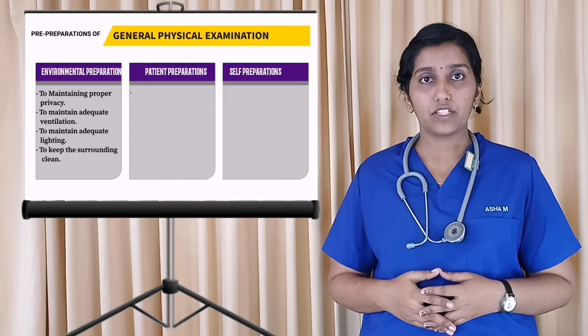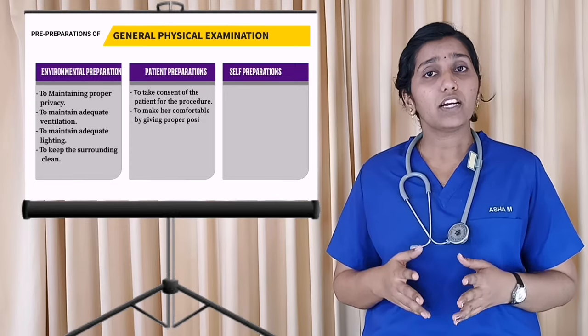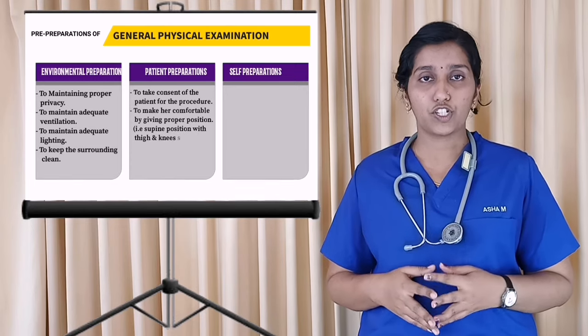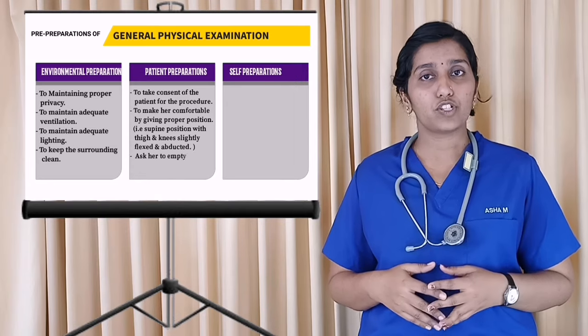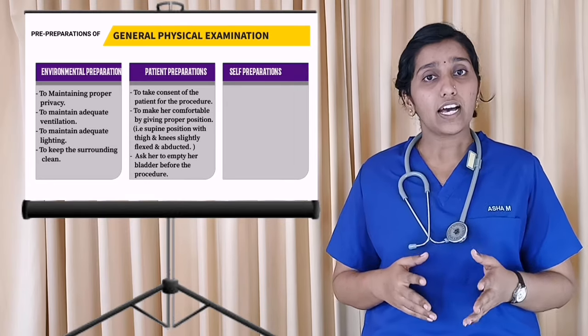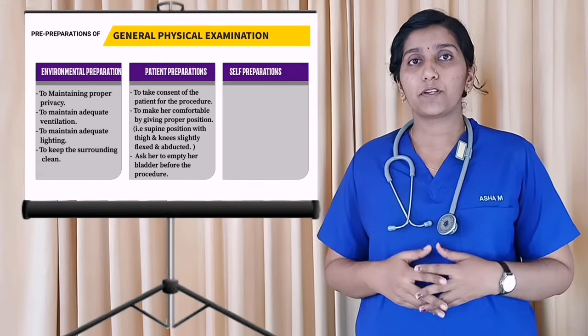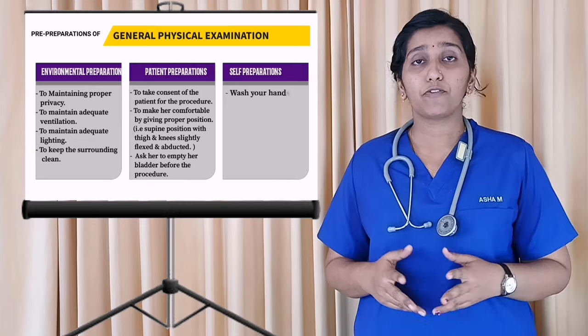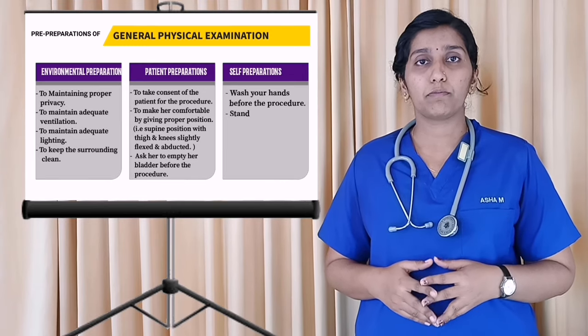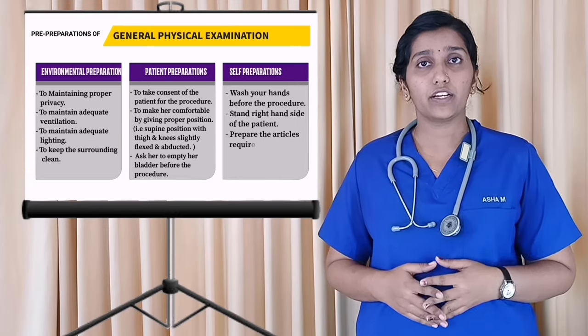Patient preparation includes taking the consent of the patient for the procedure, making her comfortable by giving proper position — i.e., supine position with thighs and knees slightly flexed and abducted — and asking her to empty her bladder before the procedure. Self-preparation includes washing your hands before the procedure, always remembering to stand on the right-hand side of the patient, and preparing articles required for the assessment.